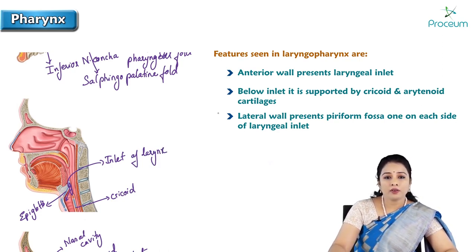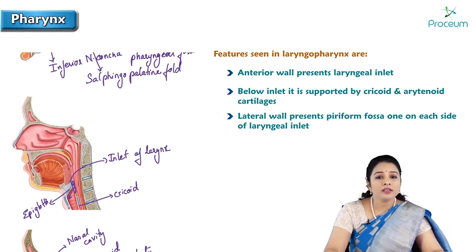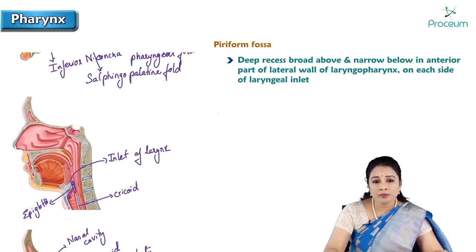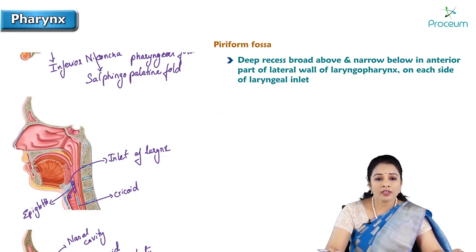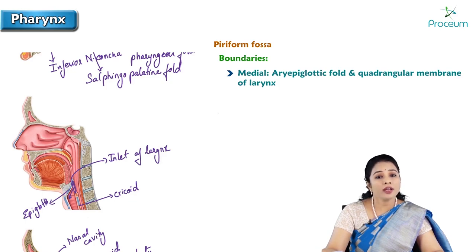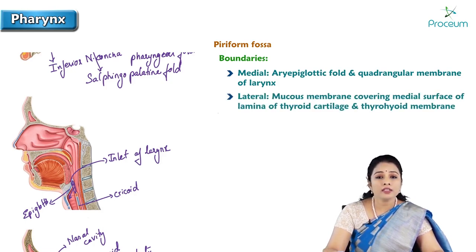It is supported by the cricoid and arytenoid cartilages. The lateral wall presents the piriform fossa on each side of the laryngeal inlet. The piriform fossa is described as a deep recess — pyramidal shaped, broad above and narrow below — present in the anterior part of the lateral wall of the laryngopharynx on each side of the laryngeal inlet. These recesses are produced by the bulging of the larynx into the laryngopharynx. Medially it is bounded by the aryepiglottic fold and quadrangular membrane of the larynx. Laterally it is bounded by the mucous membrane covering the medial surface of the lamina of the thyroid cartilage and the thyrohyoid membrane.